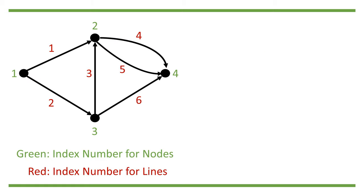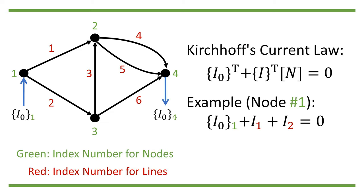Then, according to Kirchhoff's current law, we need to have I_0 transpose plus I transpose N equals 0, where I is the current on each line, and I_0 is the current coming in or going out from the rest of the grid at each node.